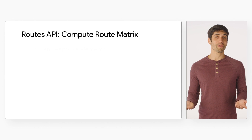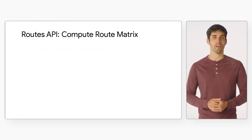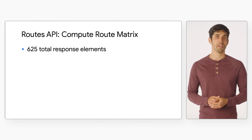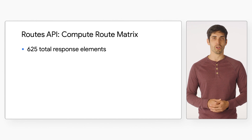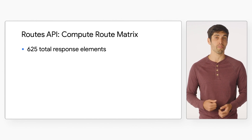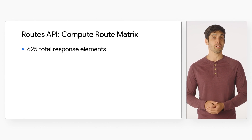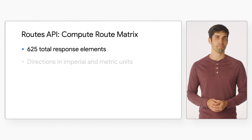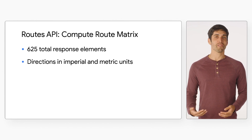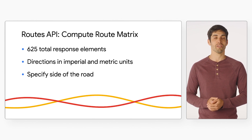In the case of distance matrix requests, the Routes API makes the route calculation and optimization capabilities of Google Maps Platform for multiple origin and destination points even more powerful than ever. We'll return a matrix of as many as 625 total elements — that's more than six times the number of response elements returned by the existing Distance Matrix API. This makes the addition of support for gRPC requests particularly useful, since you can stream the response, meaning no waiting for larger distance matrix calculations to complete in their entirety before results start returning. You can also request that navigation instructions be returned in Imperial as well as metric units, and specify the side of road for waypoints in distance matrix requests to improve the accuracy of duration and arrival times.